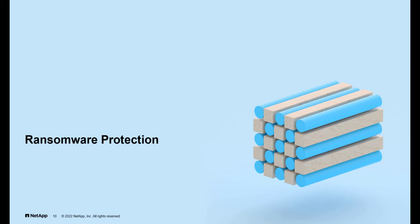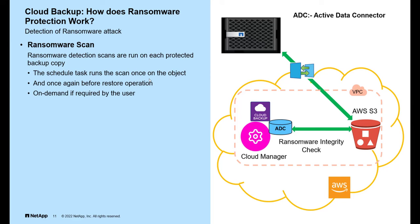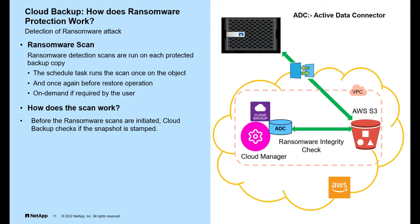Now let's understand how ransomware protection works. Ransomware detection scans are run on each protected backup copy in the following scenarios: a scheduled task runs the scan once on the object; it runs once again before the restore operation, which is optional; and on demand if required by the user. Before ransomware scans are initiated, cloud backup checks if the snapshot is stable. Cloud backup then uses the Active Data Connector integrity checker REST API to initiate the scan.